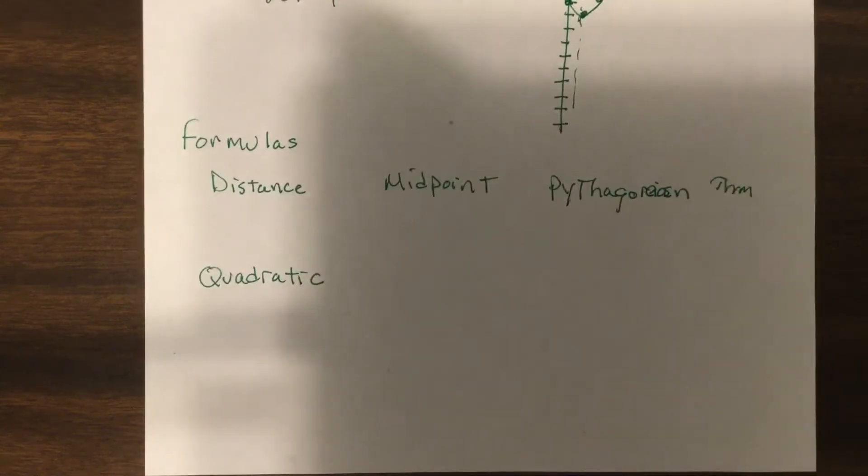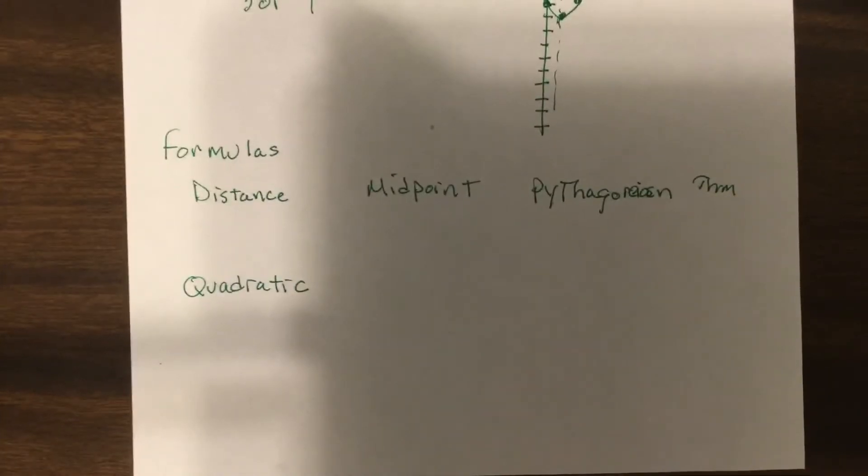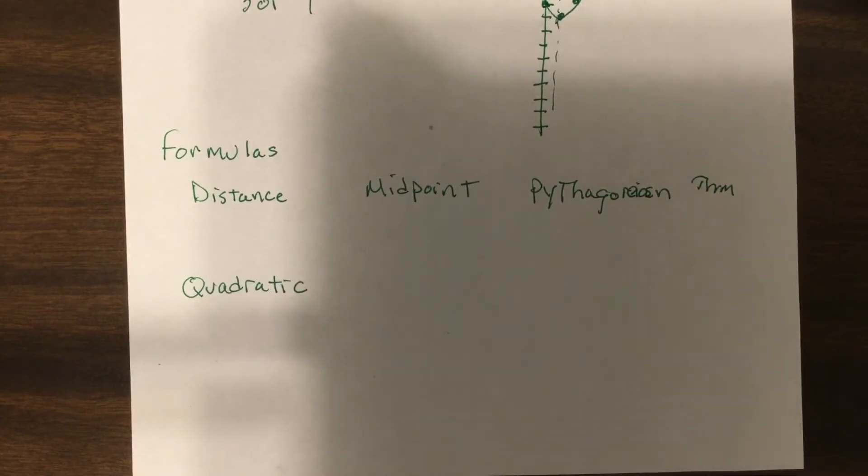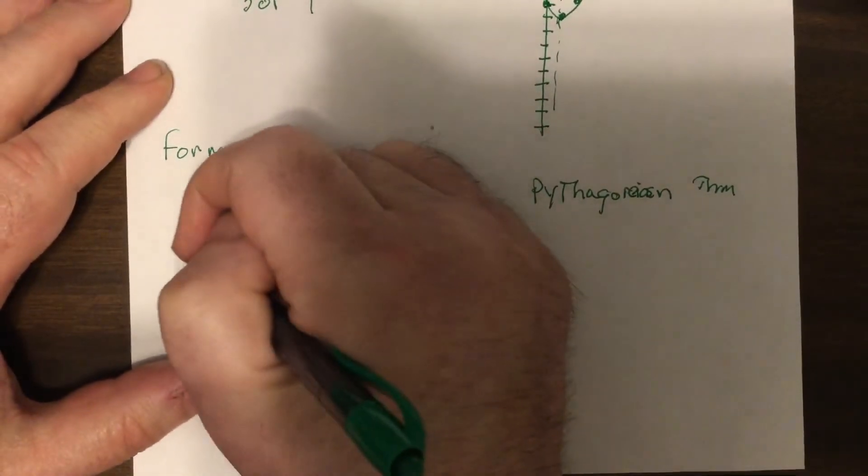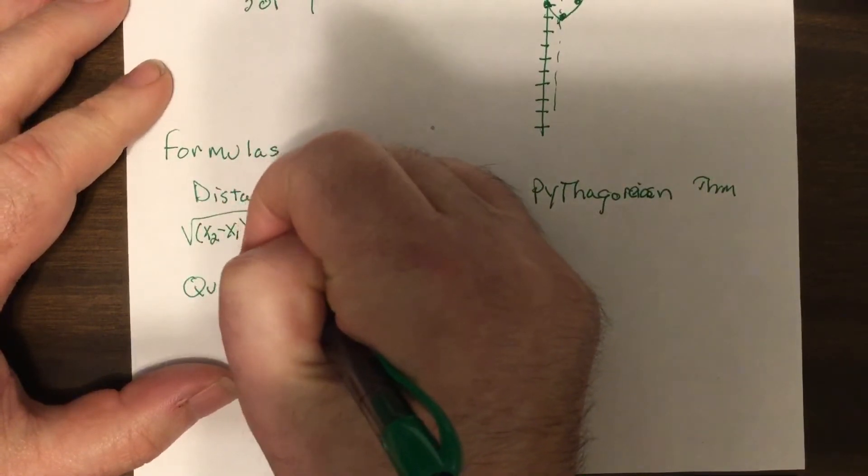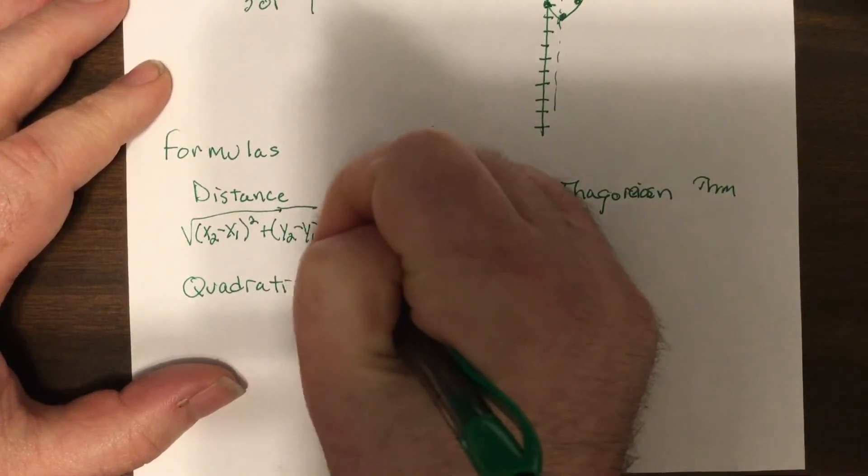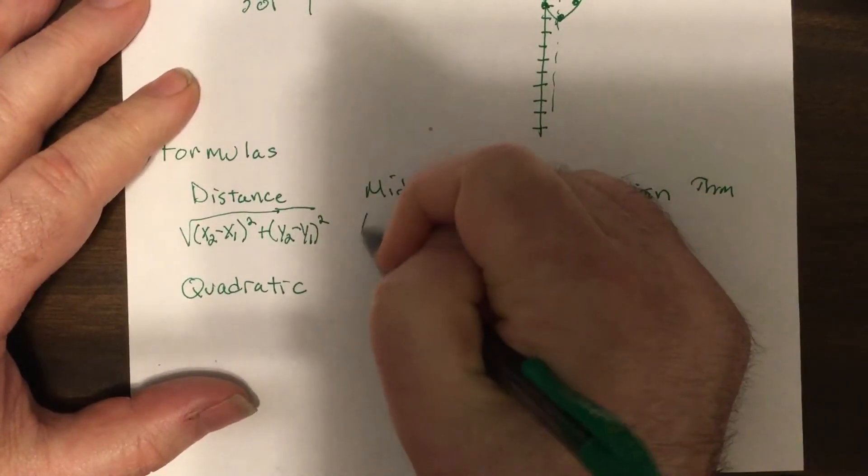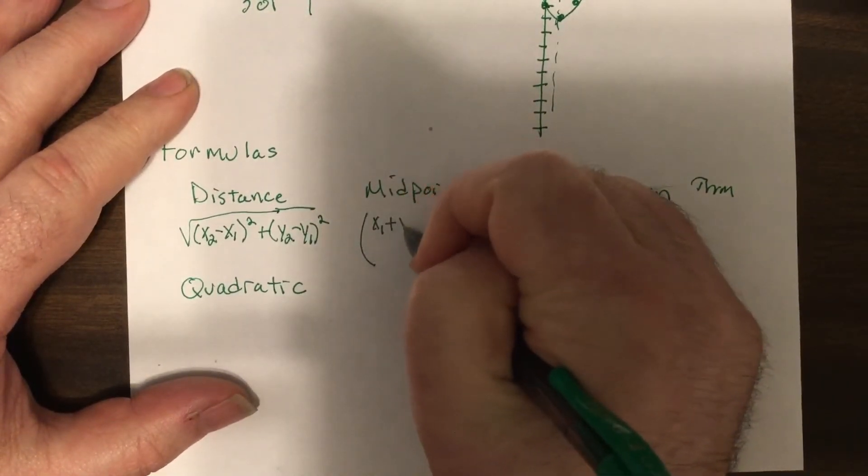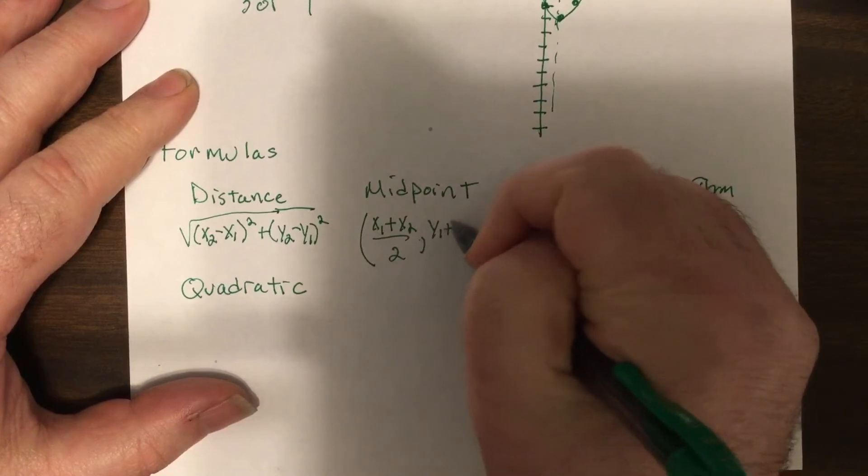Now there's four formulas they're gonna ask you on the test. So not only do they ask you what they are for points, they also ask you to use them, which we have used them throughout these videos. So what are the four formulas? Distance: the square root of the difference of the x's squared plus the difference of the y's squared. Midpoint: add the x's, divide by two, add the y's, divide by two.